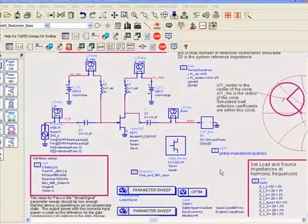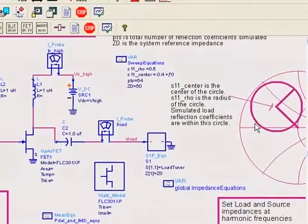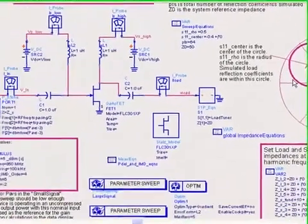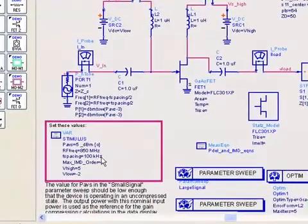This copies a schematic and corresponding data display into your project directory. As with the one-tone load-pull simulation setup, you have to specify the circular region inside the Smith chart of which the loads will be swept, but you also have to specify the center frequency of the two tones as well as their spacing.